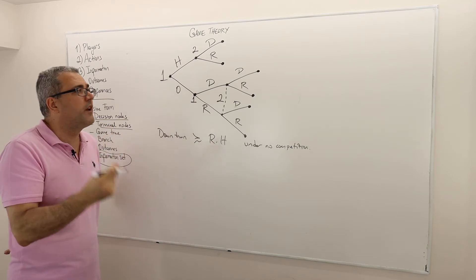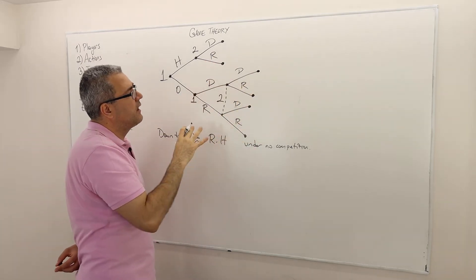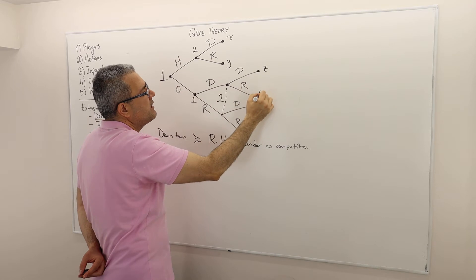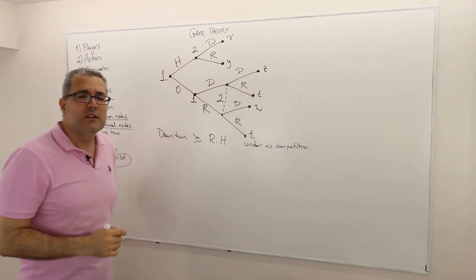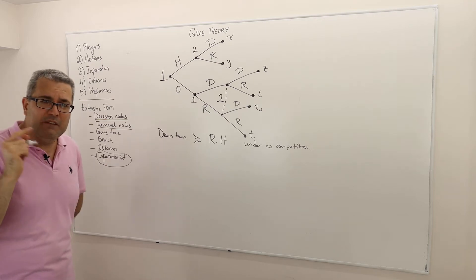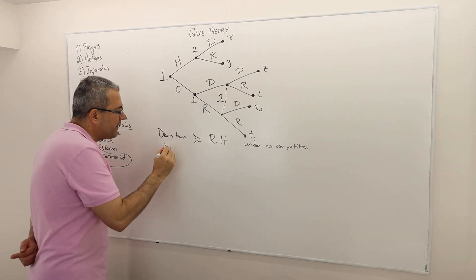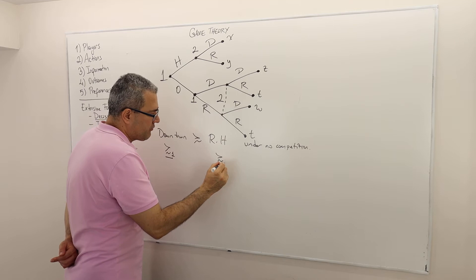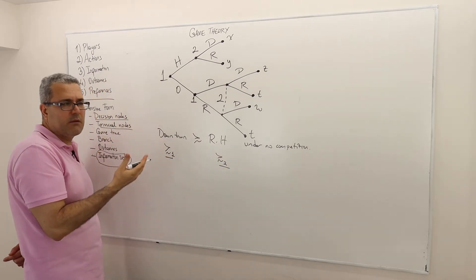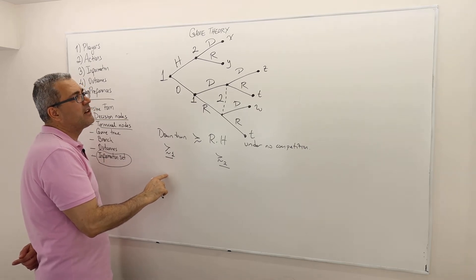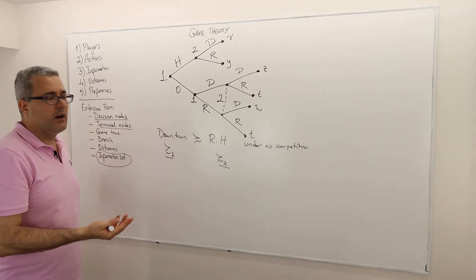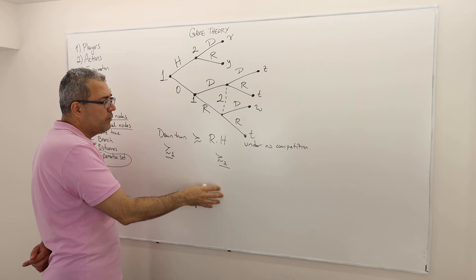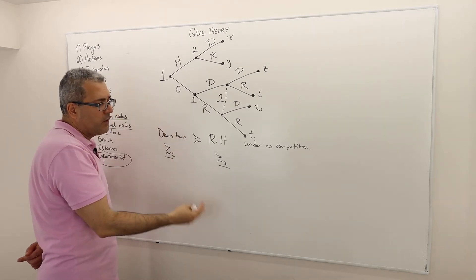What I need to specify is: once I have these final decision nodes, I'm going to call them X, Y, Z, T, W. That information is perfectly enough to solve this game. What is the preference relation? I'm going to call the preference relation of the first player as such, and the preference relation of the second player as such. So how does Player One rank these alternatives or outcomes? Same here — how does Player Two, Mr. Green, rank those alternatives?